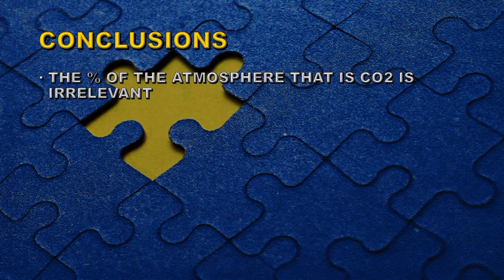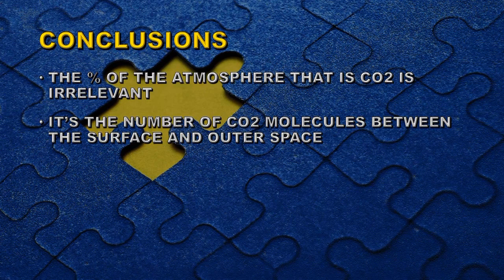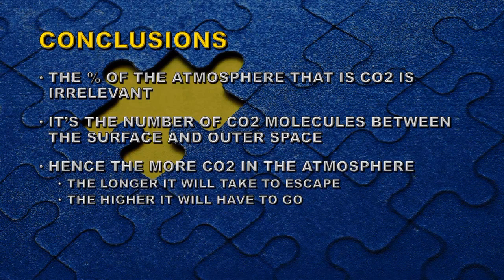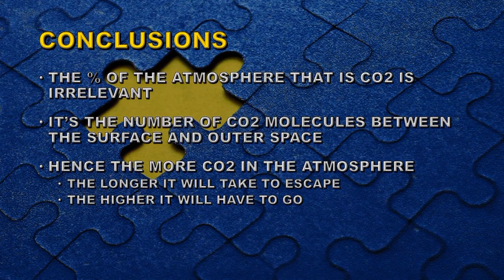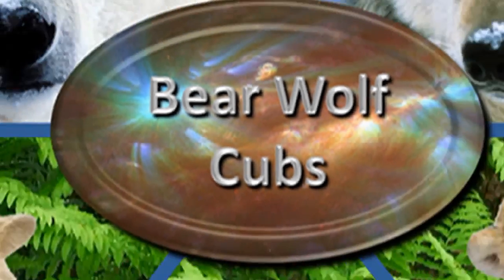So let's draw some conclusions. First, the percentage of the atmosphere that is carbon dioxide or any other greenhouse gas is irrelevant. It's the number of CO2 molecules between the surface and outer space that makes the difference — in other words, it's the partial pressure or column density. The more CO2 in the atmosphere, the longer it will take for a photon to escape because it has to go through more steps, and the higher it will have to go in order to find a mean free path long enough to escape into space. Both of those effects create a warmer earth. Goodbye until next time.